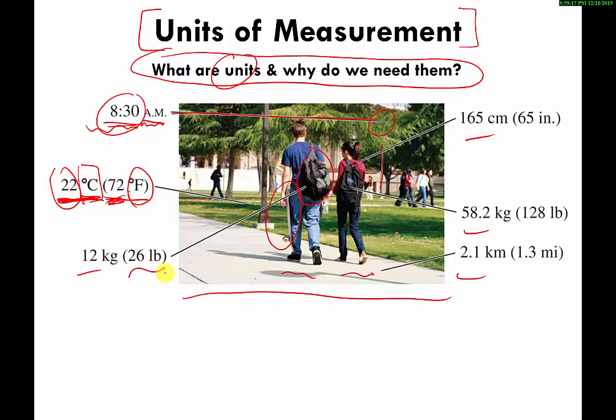This student on the left is carrying around 26 pounds worth of textbooks, which is probably about 3 million dollars worth the way you're charged these days. The punchline is that anytime you make a measurement and get a number, you need some type of unit - centimeter, kilogram, pound, degree Fahrenheit - to allow other people to understand what your numerical measurement actually means.